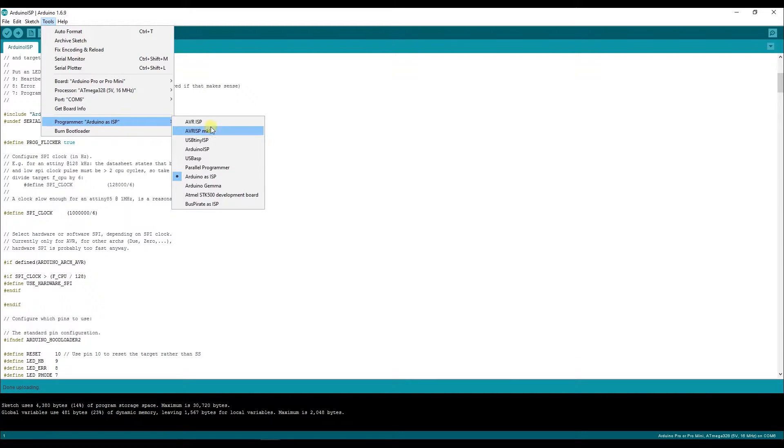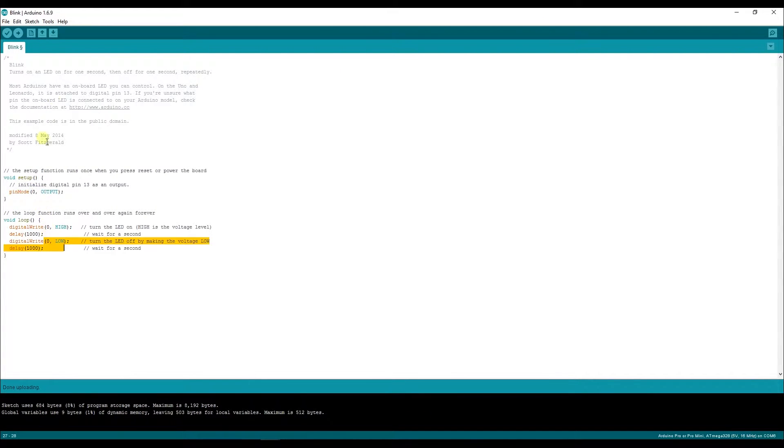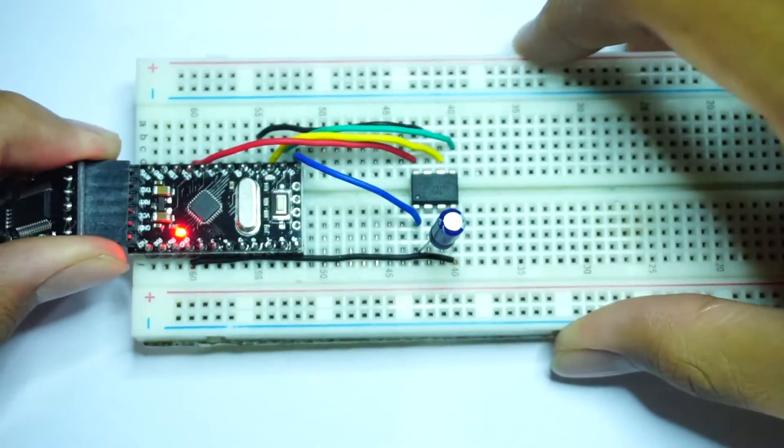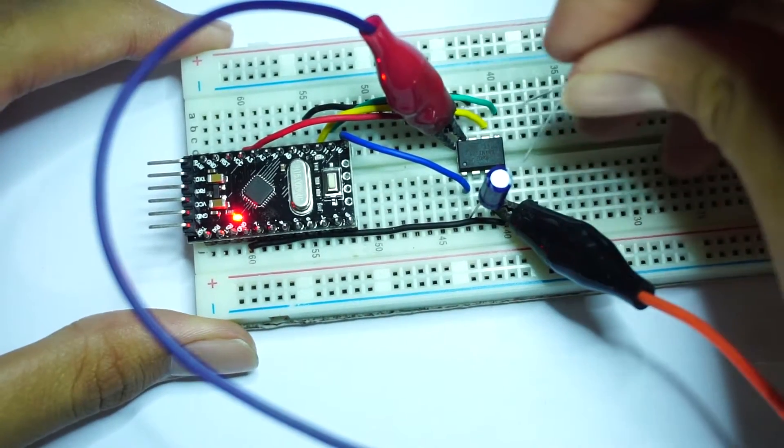Now, open the blink sketch, change pin 13 to pin 0, then in tools, select the ATtiny 85 board, and set it to 8MHz Arduino ISP and upload. You should see the Arduino blinking fast, then done uploading, so you're basically done here.